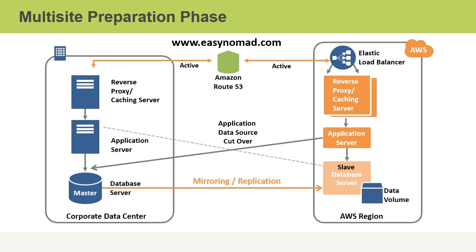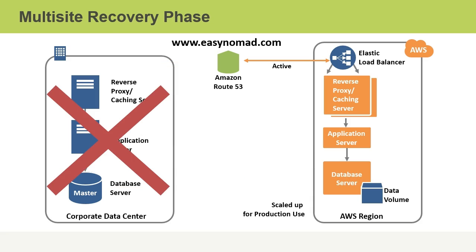In our diagram, we have our corporate data center on the left where we've got an application server and a database server — this would be our active configuration. In the cloud, at the same time, we could also have another active configuration, so this would be active-active. This means that both sides, the corporate data center or on-premises configuration as well as our Amazon Web Services cloud configuration, would both be active and processing requests at the same time. However, if there is a failure — for example, in our corporate data center — then we could ensure that our second active configuration in the cloud would take over. Route 53 DNS configurations with weighted routing play a big role in this.